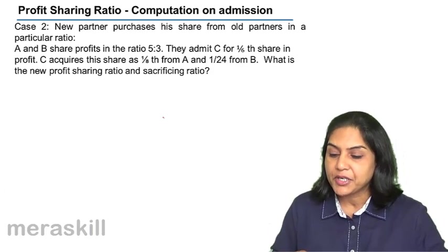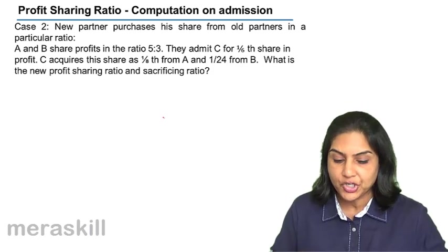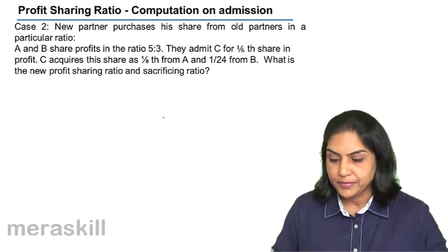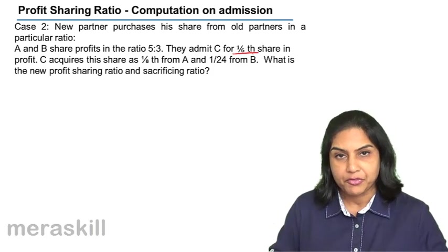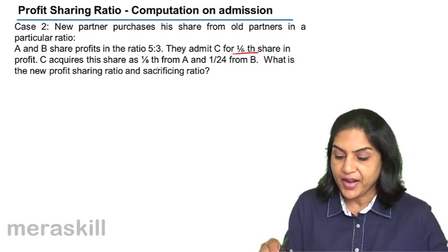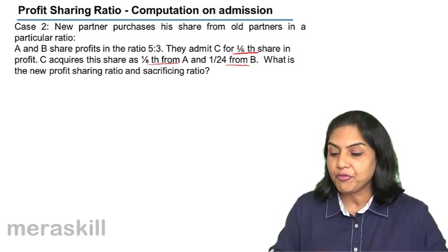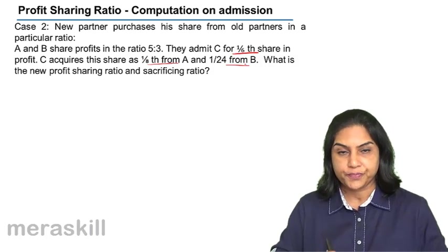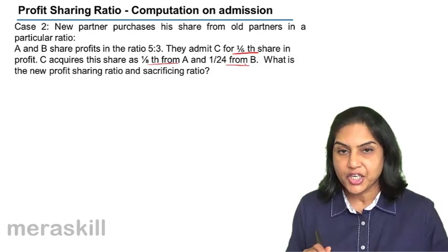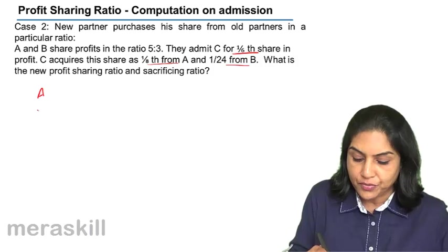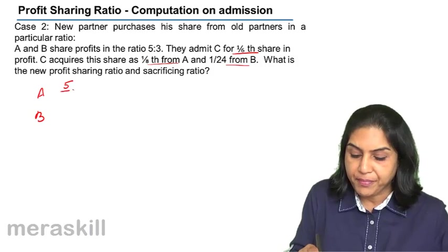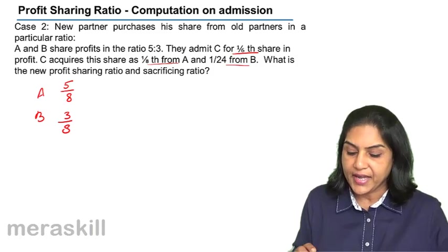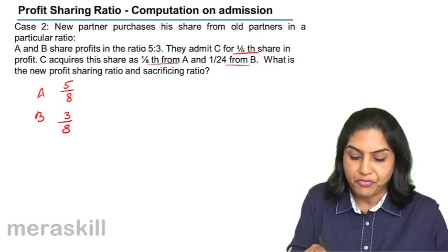Next case: the new partner purchases his share from old partners in a particular ratio. A and B share profits in the ratio of 5 is to 3. They admit C for 1 sixth share in profit. C acquires this share as 1 eighth from A and 1 by 24 from B. What is the new profit sharing ratio and sacrificing ratio? A and B's shares are 5 by 8 and 3 by 8 respectively.